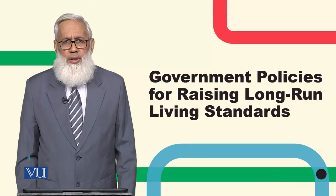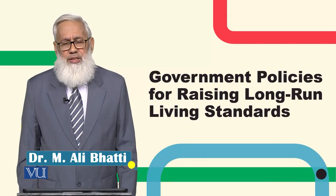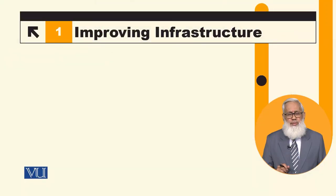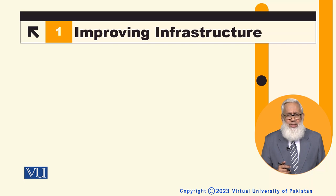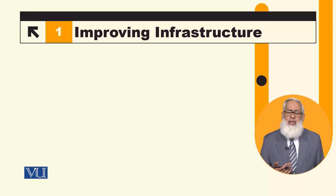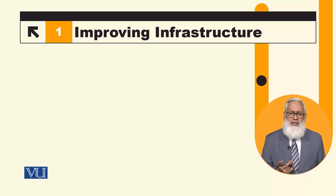Government policies for raising long-run living standards. Students, we started this topic in the last module — that political governments have a very important objective: they want to improve their living standards. So what policies have been made through which living standards can improve?